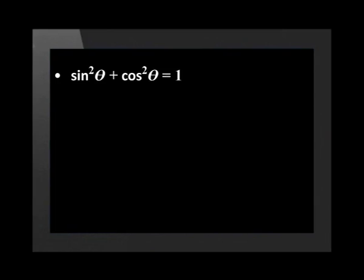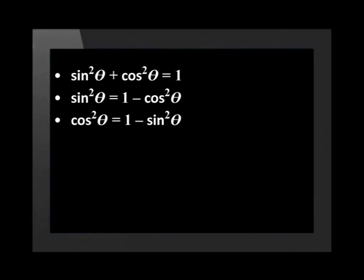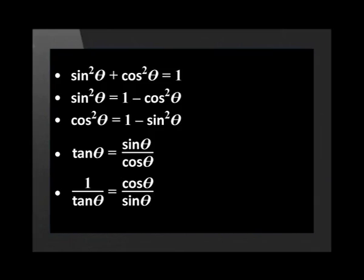Now let's revise our trigonometric identities. Sine squared theta plus cos squared theta is equal to 1. Sine squared theta is equal to 1 minus cos squared theta. Cos squared theta is equal to 1 minus sine squared theta, and tan theta is equal to sine theta over cos theta, and 1 over tan theta is equal to cos theta over sine theta.